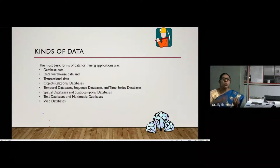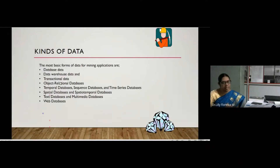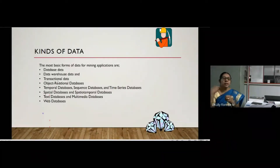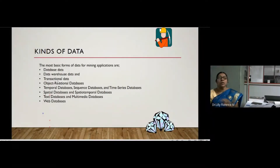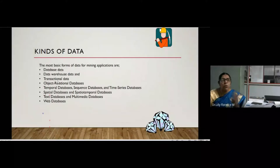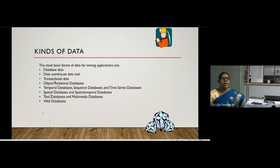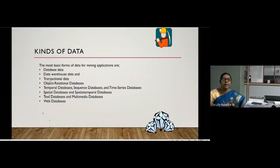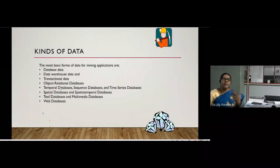The next type is transactional data — sequences of transactions stored in a database. For example, a bank analyzing whether to approve a loan for a customer will examine the previous three months of transactions to make a decision. Online shopping money transactions are also stored in transactional databases and can be used for mining.